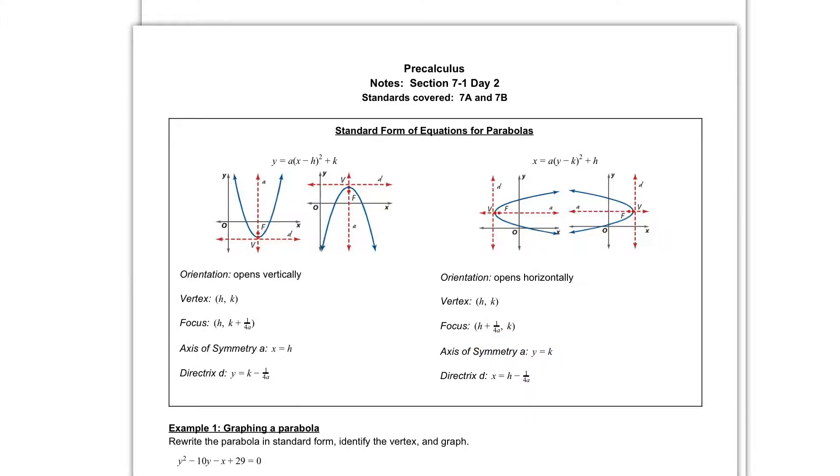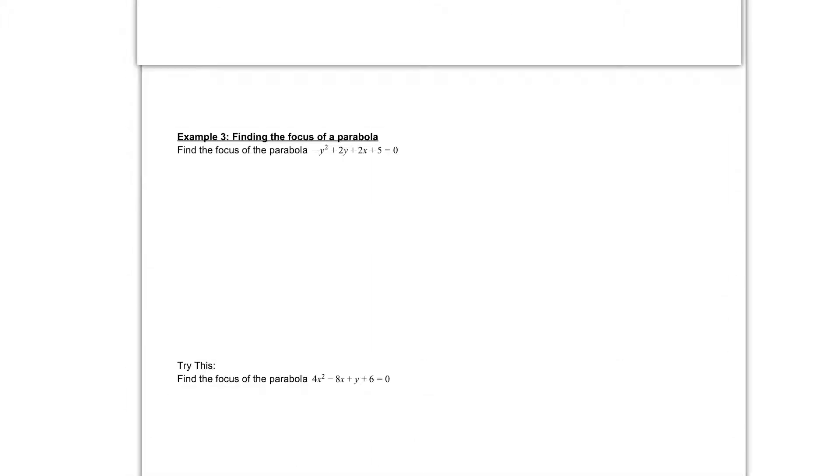So let's go ahead and write that down so we have it. So we know our focus is the formula h plus 1 over 4a, k. Now, in order to figure out what all these variables are, the h, the a, and the k, we need it in standard form. So the very first thing we're going to do is we are going to put this equation in standard form.